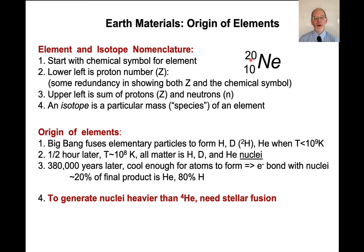The way that elements were formed is, if you go all the way back to the Big Bang, the Big Bang fused elementary particles to form hydrogen, deuterium. Deuterium is hydrogen that has one proton and one neutron, so it has a mass of two. There's another isotope of hydrogen called tritium that it's radioactive. It has one proton and two neutrons.